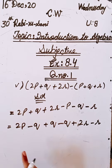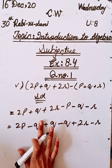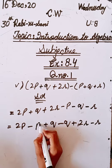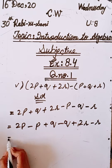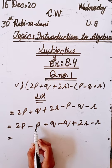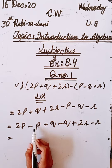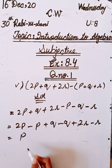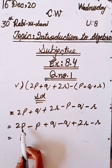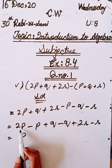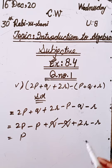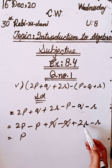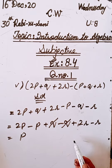So we write: plus p, plus q minus q will cancel out. Similarly, 2r minus r. When we subtract one r from 2r, we get r remaining. So the answer is p + r.